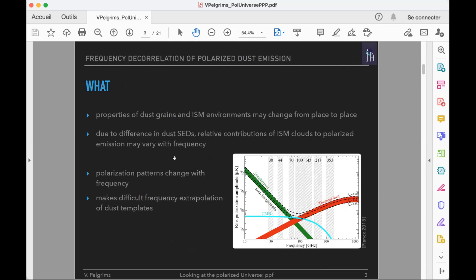As we all know, properties change from place to place in the galaxy, and so it is certain that SEDs of dust grains may change, which would imply that relative contribution of ISM clouds to polarized emission may vary with frequencies. As a result, if SEDs vary, the polarization patterns seen at one frequency cannot be extrapolated as easily as we want to lower frequencies where CMB polarization studies would be performed.